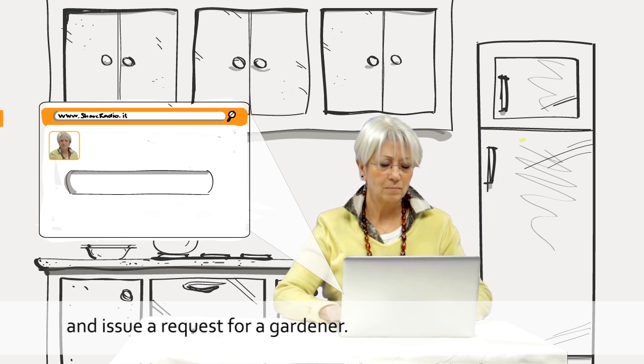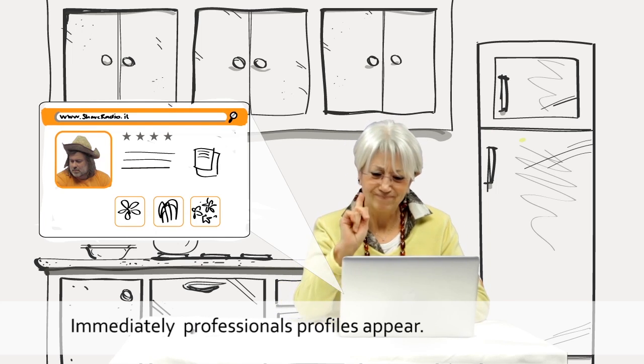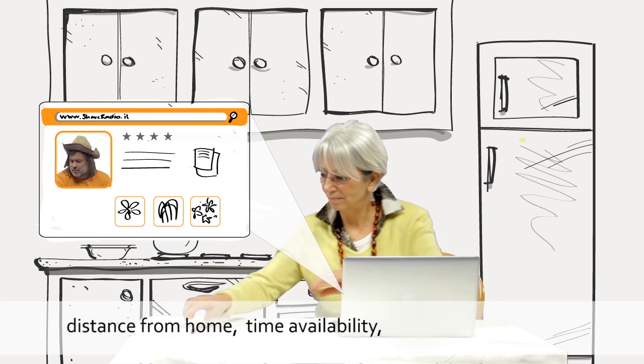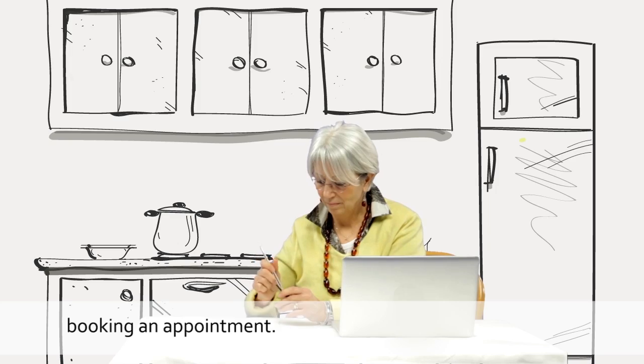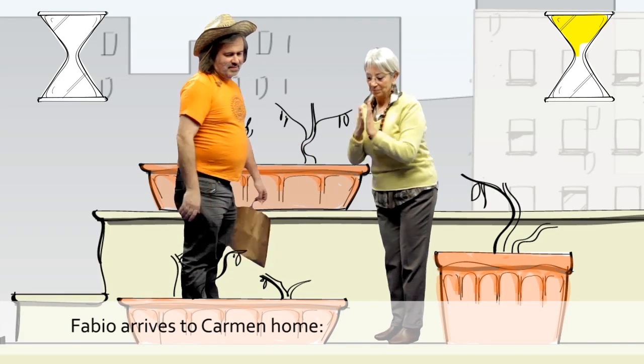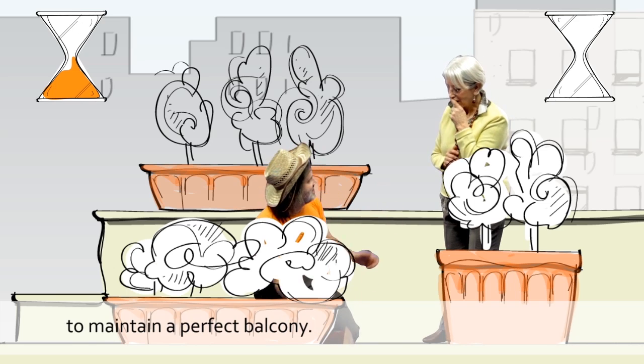Carmen opens her Share Radio profile and issues a request for a gardener. Immediately, a professional's profile appears. She can check some information. Distance from home, time availability, and Share Radio members' feedback. Carmen asks Fabio to come, working an appointment. Fabio arrives to Carmen's home, cleans and tools, sowing and fertilizing. Finally, explains some basic rules to maintain a perfect balcony.